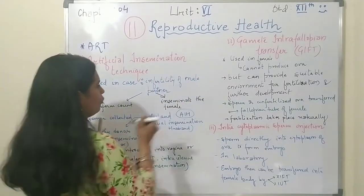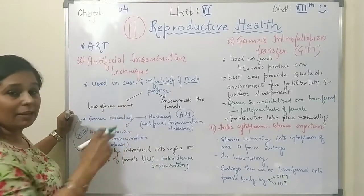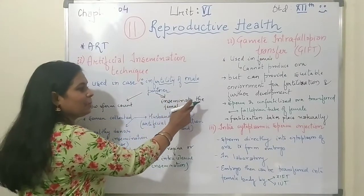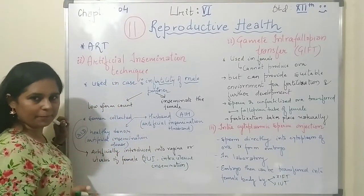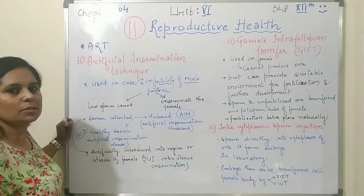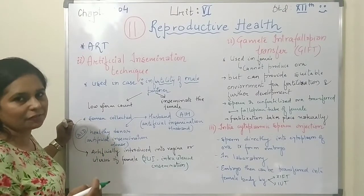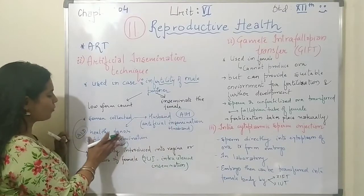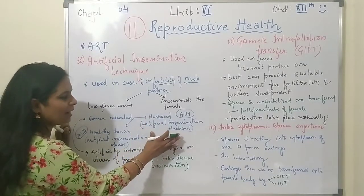So if the male is infertile — in the case of low sperm count or inability to inseminate — this technology will be used. The sperm will be injected into the female body. Semen is collected either from the husband or from a healthy donor. If the sperm is given by the husband, it is called artificial insemination by husband.